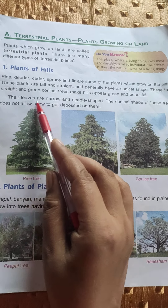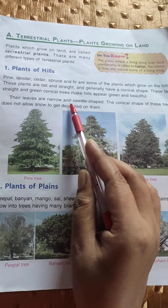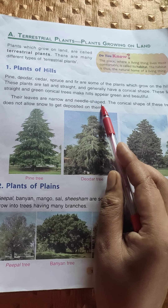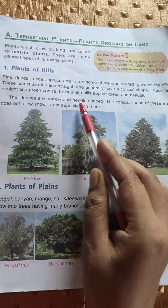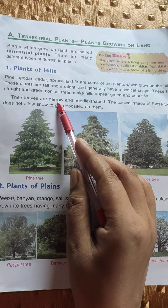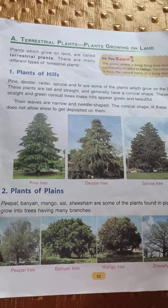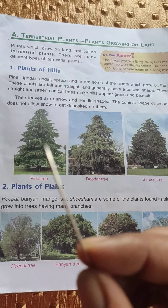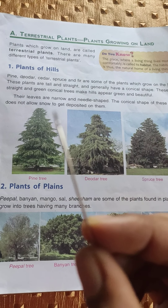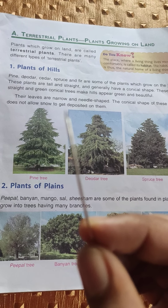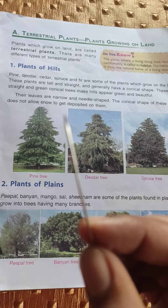The leaves of these plants are narrow and needle-shaped. Narrow means less wide, and needle means a sharp point at one end — like this. This is a needle.